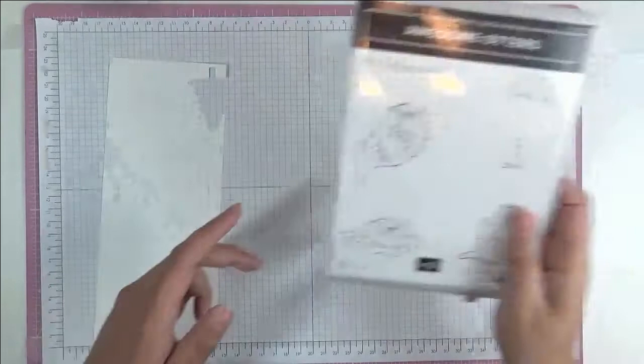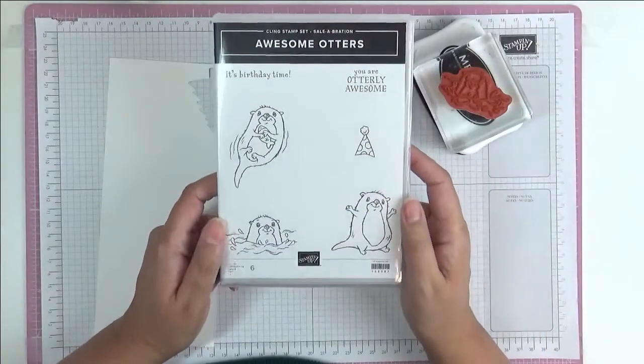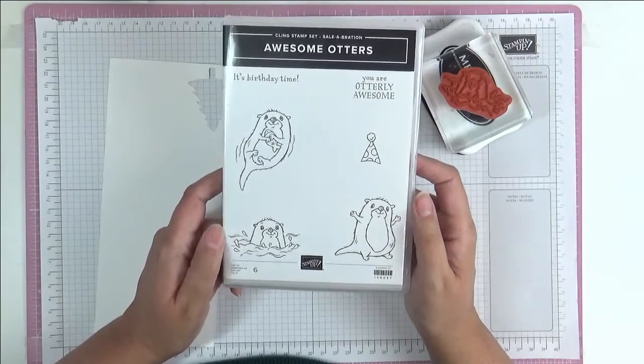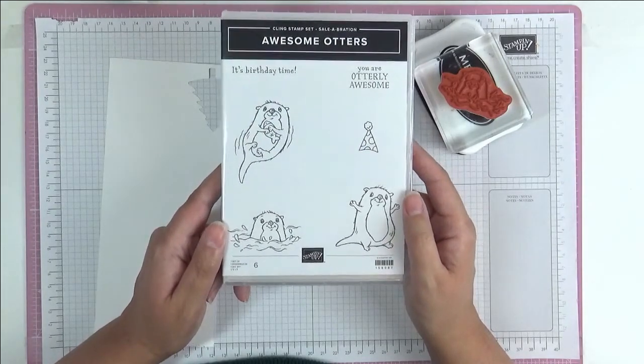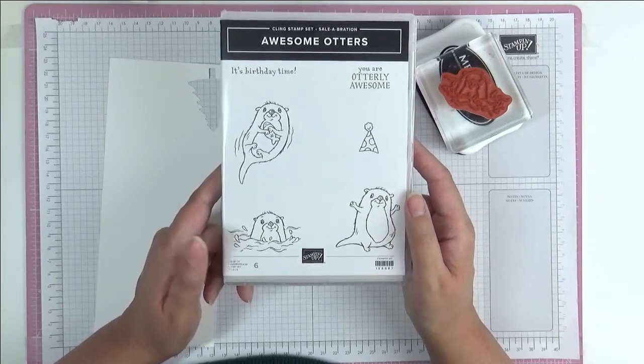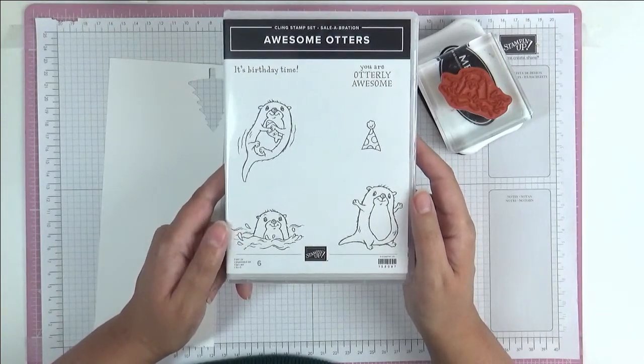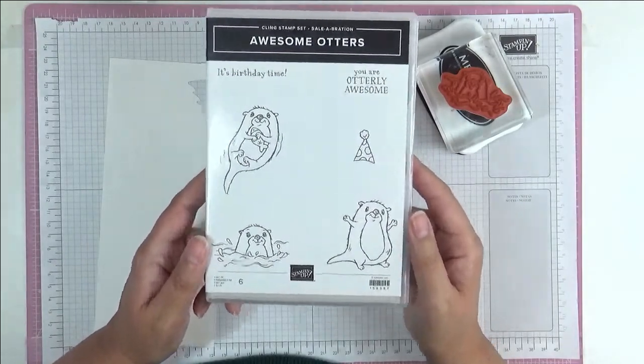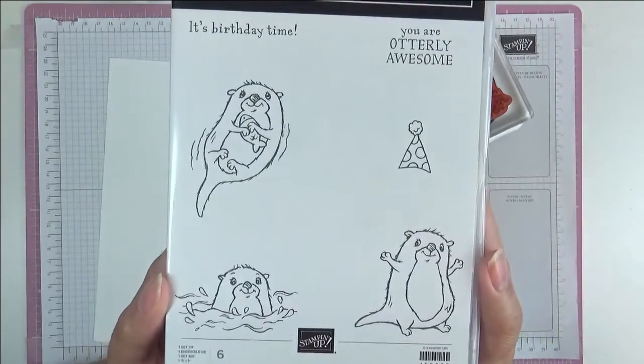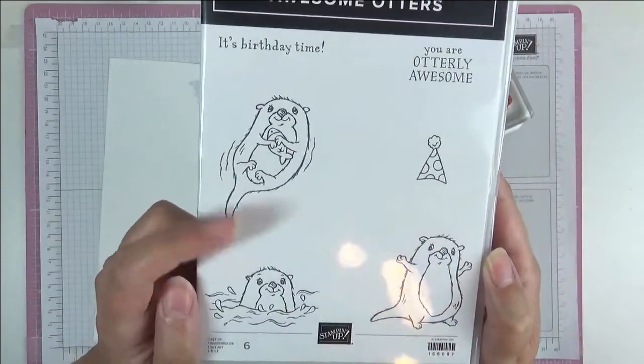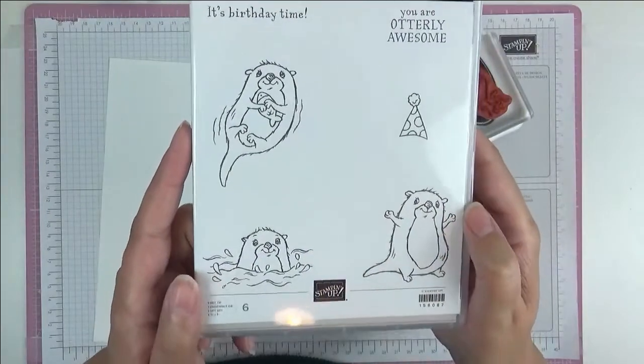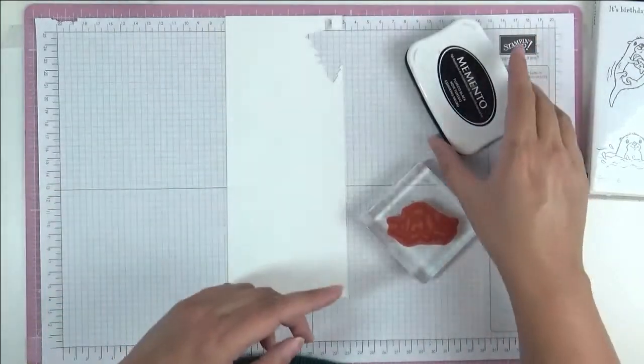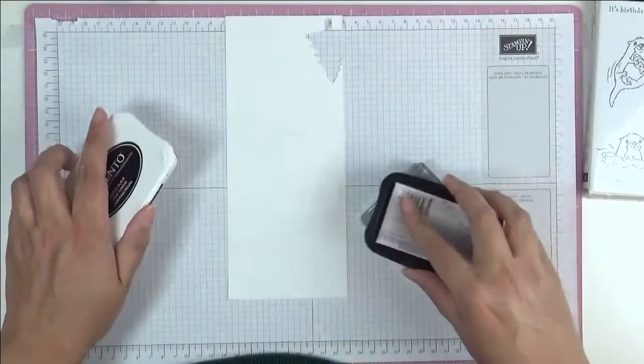This is a stamp set called Awesome Otters. It's a freebie during celebration. We're in the middle of celebration at the moment, and celebration is one of the most wonderful times of the Stampin' Up! year. For every 45 pounds of product you buy, you can choose a free item and this is one of the items I got free. Aren't they cute, all these little otters? The one holding his fishy, this one's swimming, having a little dance, and you've got the little party hat. I think that's adorable.